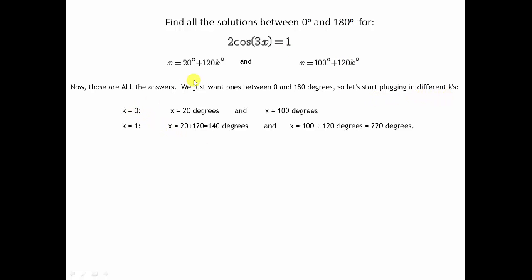Let's start with k equals 0. If k equals 0, we've got 20 degrees here. And if k equals 0, we've got 100 degrees there. If k equals 1, 20 plus 120 is 140. And 100 plus 120 is 220. But already that 220 is too much, right? We're only supposed to go up to 180. So just because of the definition of the problem, we're done. So there's only 3. There's 20 degrees, 100 degrees, and 140 degrees. And that's the solution to this lovely trigonometric equation.